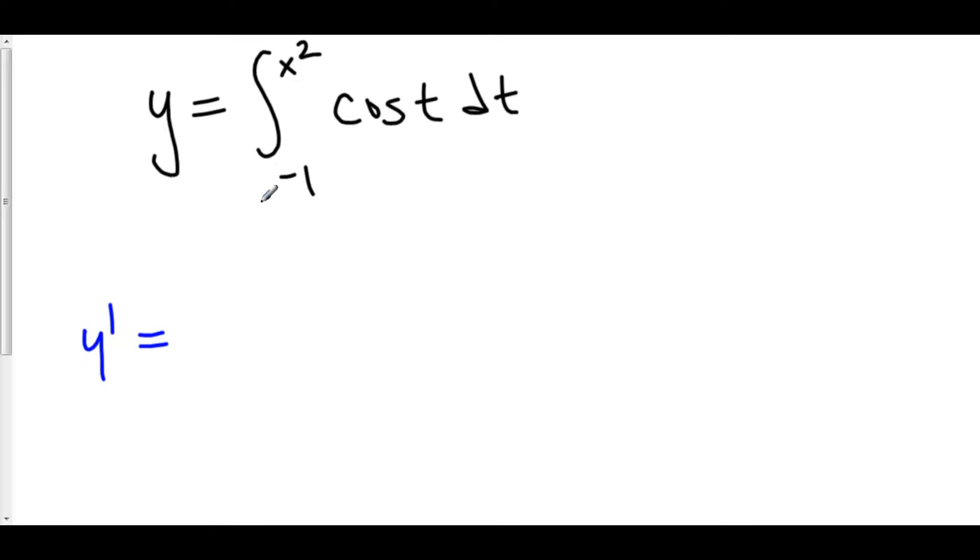Our constant is in the lower limit, that's good. However, our variable isn't just x - it's x², which means we have to do one more thing. Not only do we plug this entire thing into cosine of t, but we also multiply by the derivative of x². We have to use chain rule here.